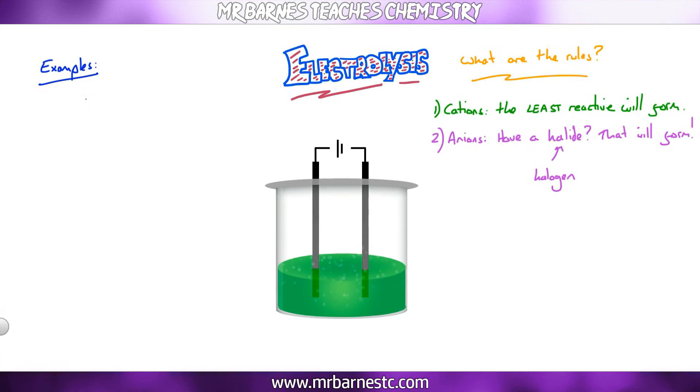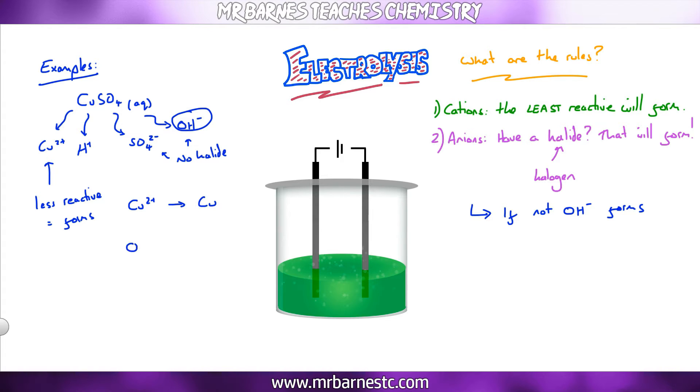If we have a look at an example, copper sulfate. The cations are Cu2+ and H+, and the anions are SO4 2- and OH-. Copper is in the transition metals, therefore it is less reactive than hydrogen, so that's going to form. So I'm going to get Cu2+ going back to my copper metal. Out of the two anions, I don't have a halide. There's nothing in there from group 7. Therefore, my OH- is going to form, and that turns back into H2O and O2.